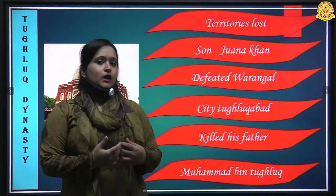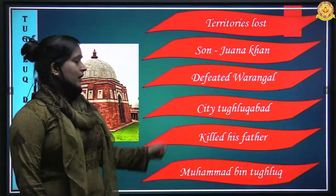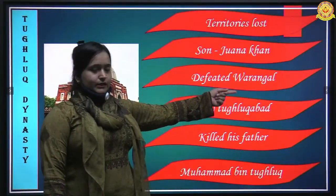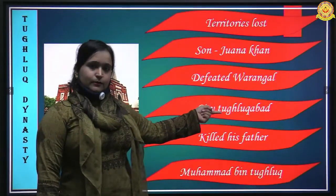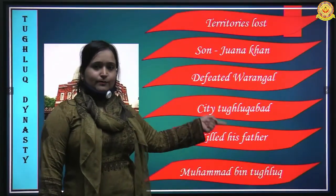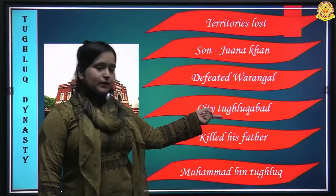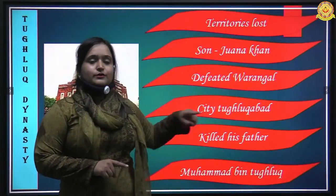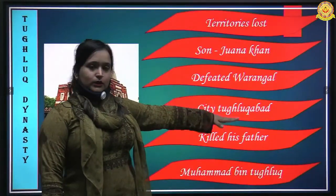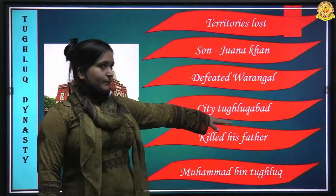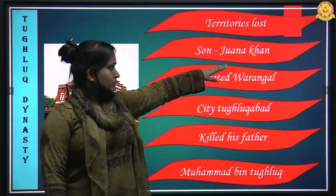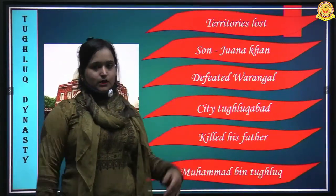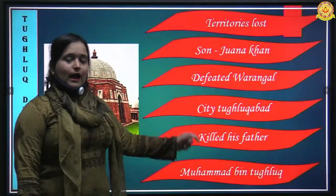Ghiyasuddin Tughlaq's son was Jonah Khan. Jonah Khan fought and defeated Warangal, then gave the city the name Tughlaqabad. After capturing Tughlaqabad, Jonah Khan killed his own father Ghiyasuddin Tughlaq and became sultan of the Delhi throne, giving himself the title Muhammad bin Tughlaq.